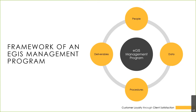At the end we'll revisit those risks and how we mitigate them, then move to questions and answers. The basic framework for a GIS program is made up of four components: people that utilize the system, data that we create or that's provided by clients, procedures being used within the program, and sometimes required deliverables that could be regulation-based.